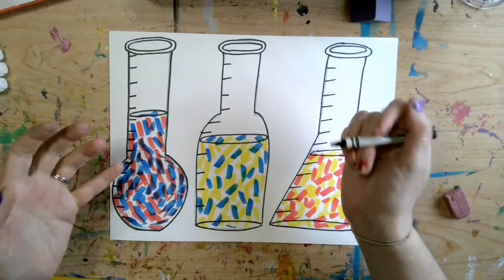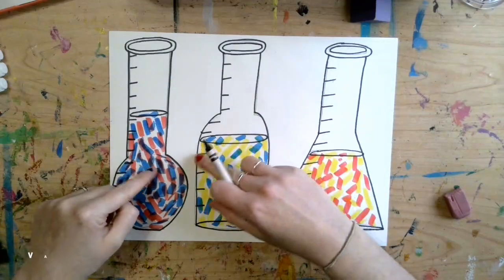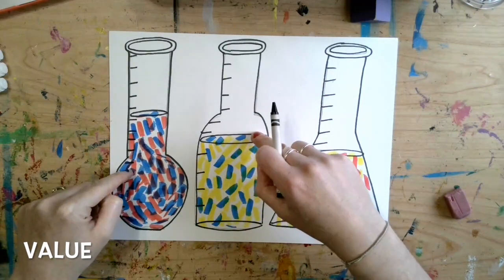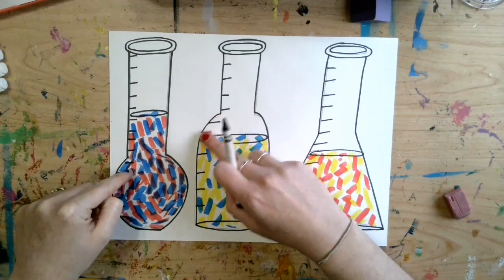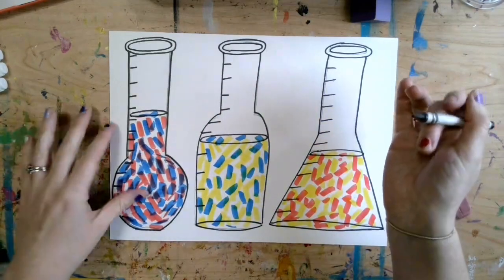Now remember, value is the lightness or the darkness of a color. And when we add value to these beakers it's going to take them from being flat to looking fat or 3D. It's going to be part of that optical illusion.